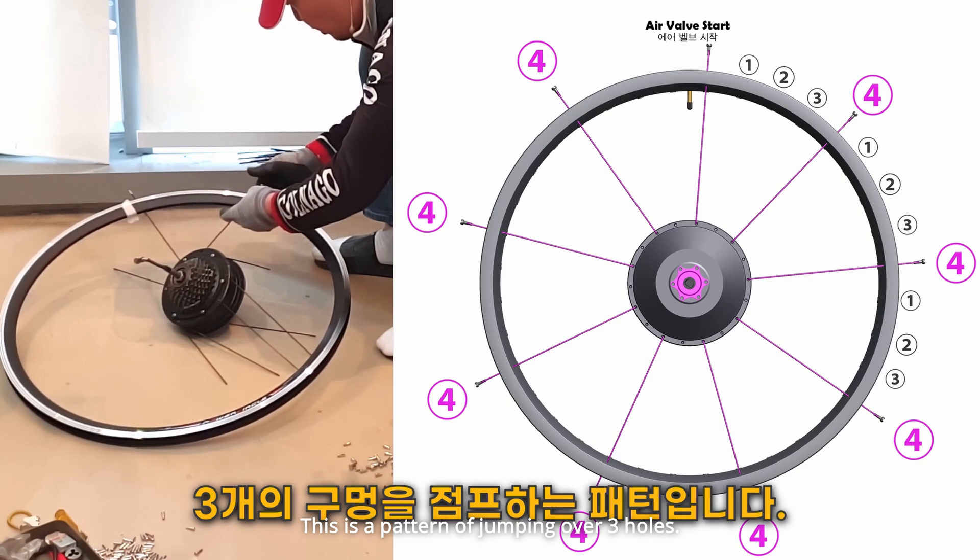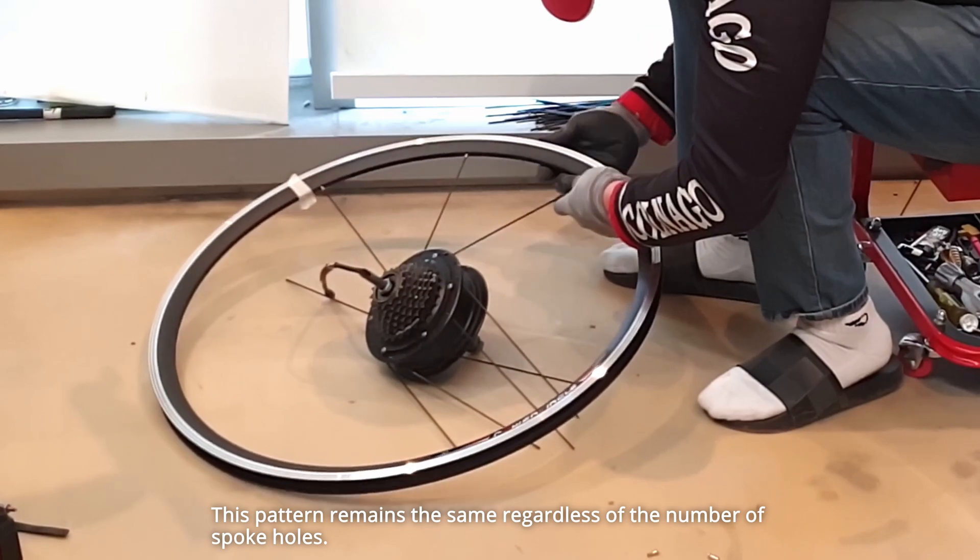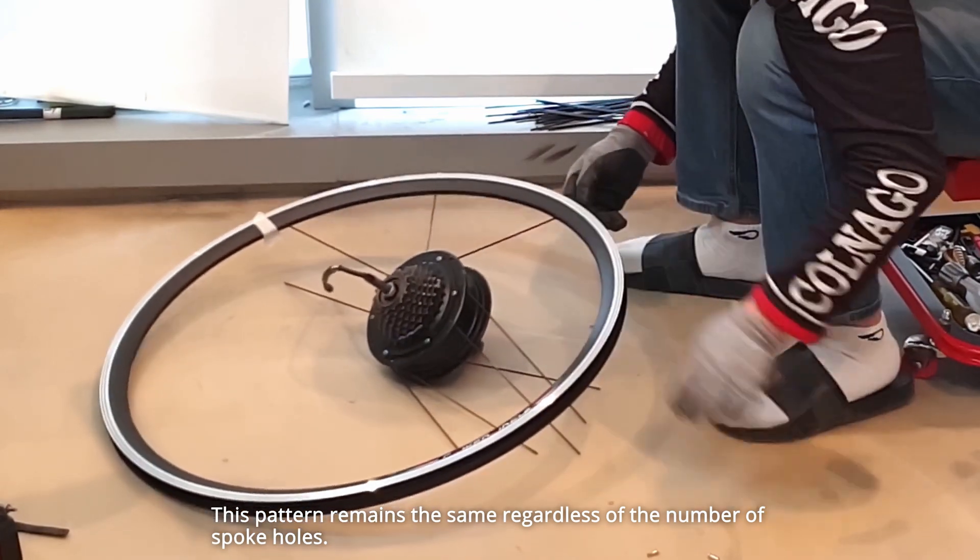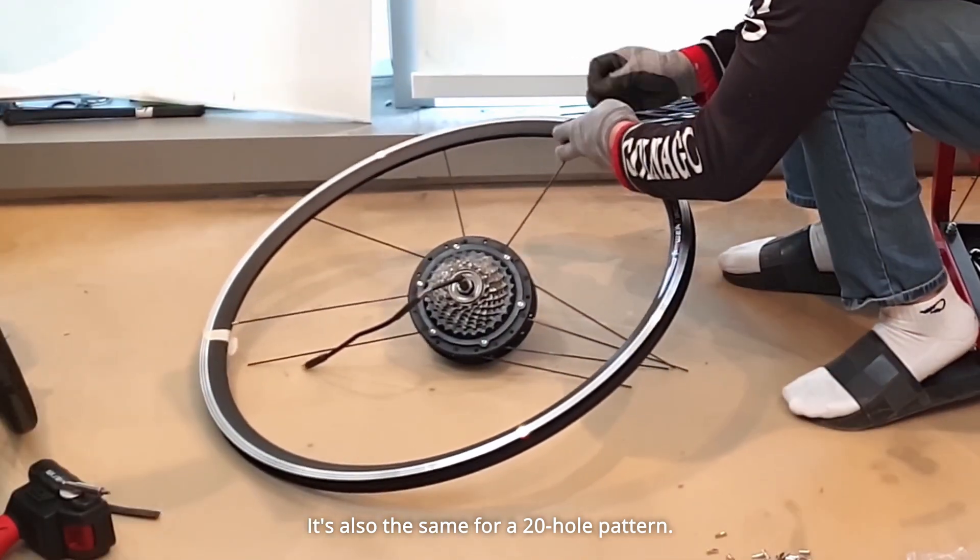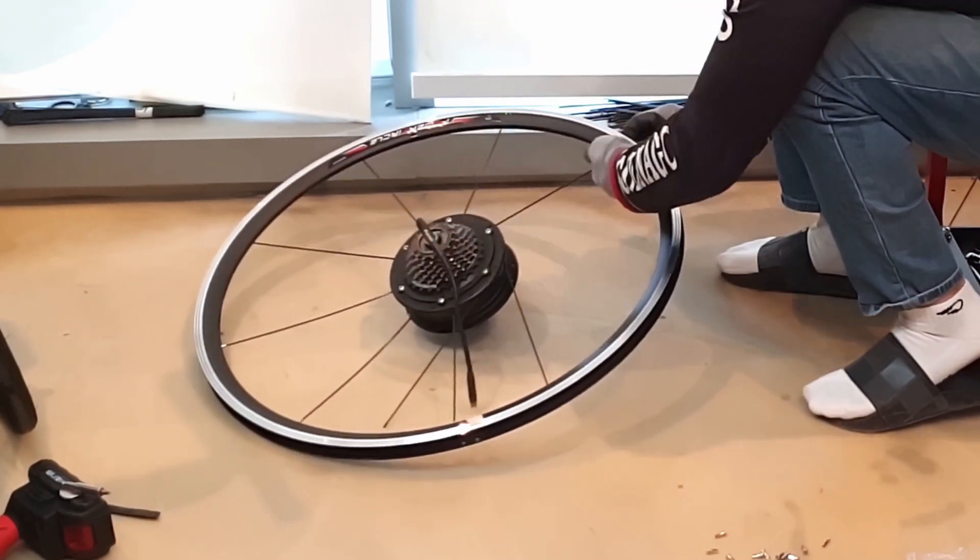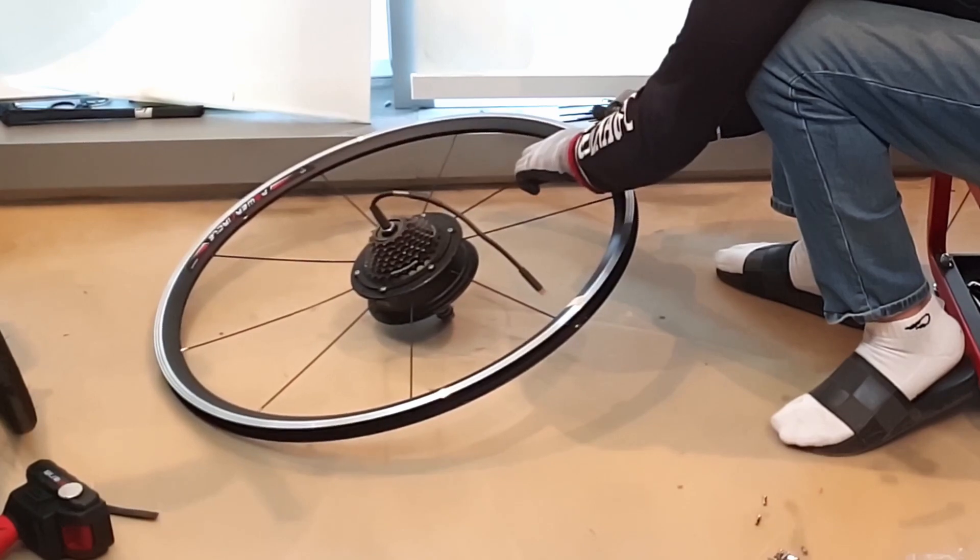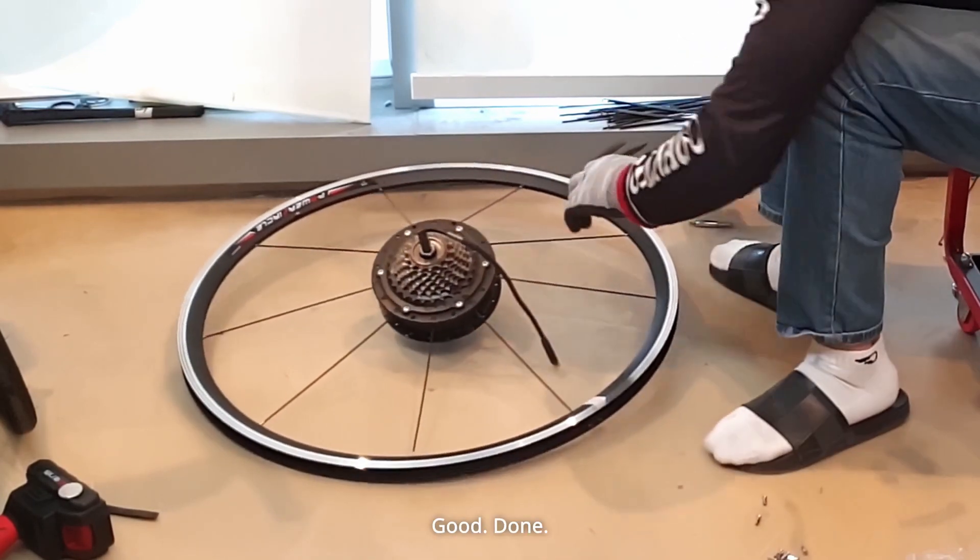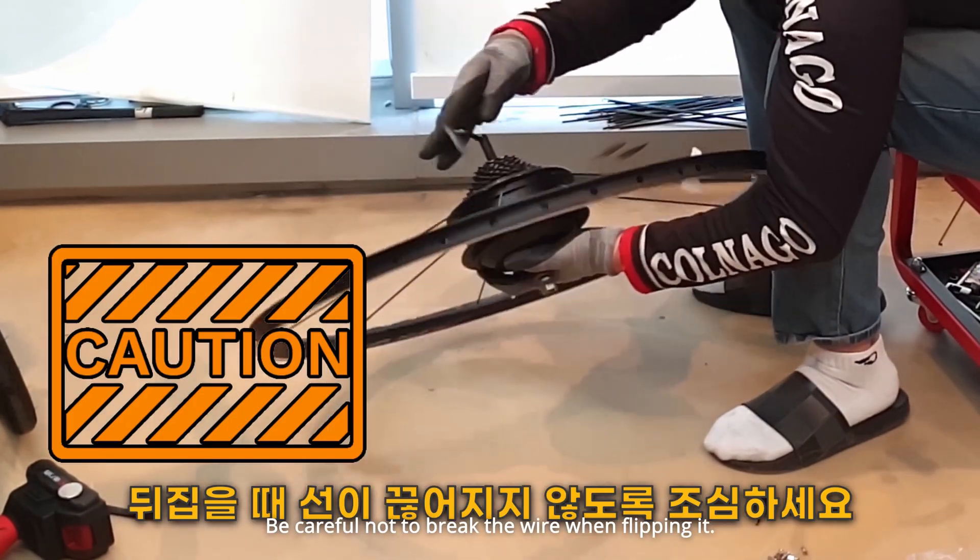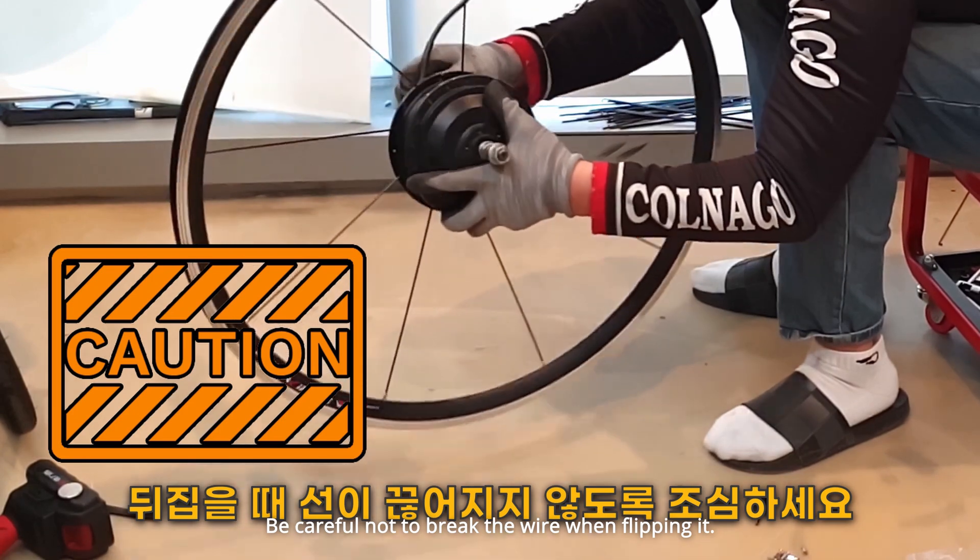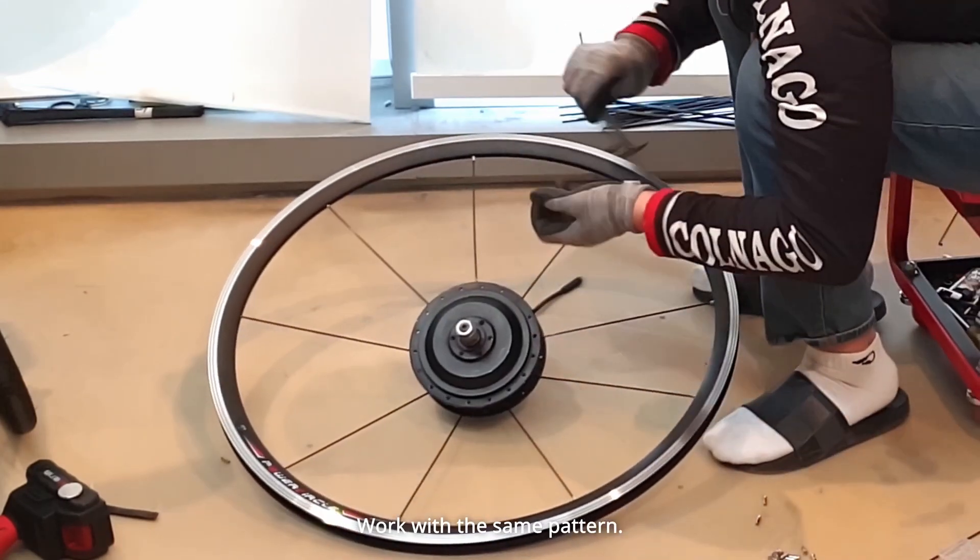This is a pattern of jumping over three holes. This pattern remains the same regardless of the number of spoke holes. It's also the same for a 20-hole pattern. It's heavy. Be careful not to break the wire when flipping it. Please put it on the floor. Work with the same pattern.